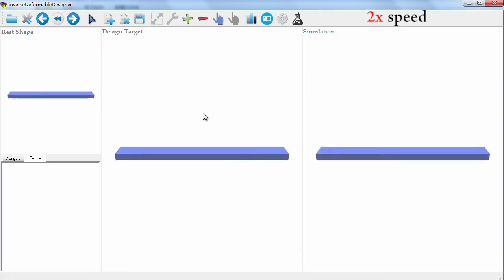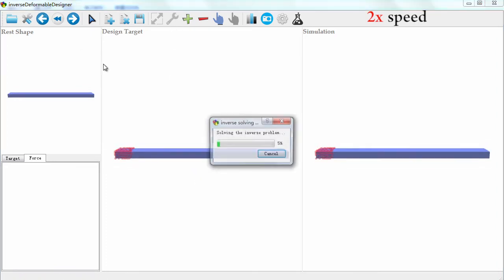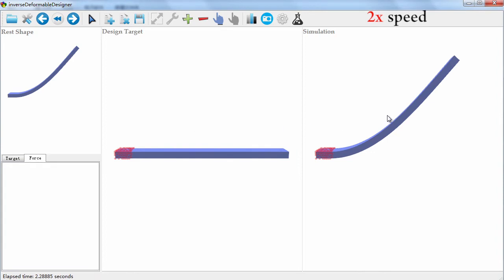Our system starts by loading the desired target shape. The user can constrain certain parts of the shape or apply external forces. Our system computes the resulting rest shape in a few seconds and presents it to the user. The computed shape will deform into the target shape.